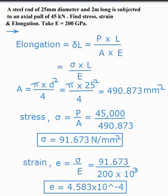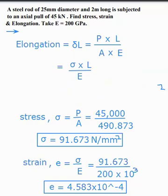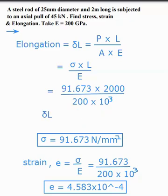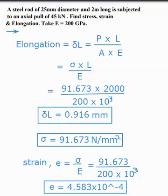So here sigma is equal to 91.673. L is length, it is 2000 mm, divided by modulus of elasticity, it is 200 into 10 raised to the power 3. We get elongation from that. Elongation is equal to value 0.916 mm. This is the final answer.